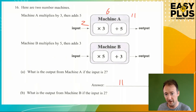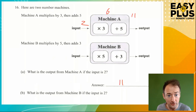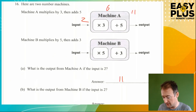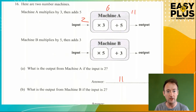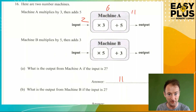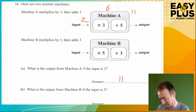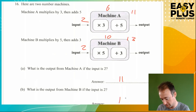What is the output from machine B if the input is 2? So we try that: 2 times 5 is 10, plus 3 is 13. So the answer is 13.